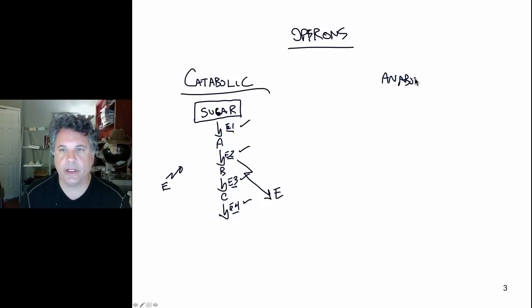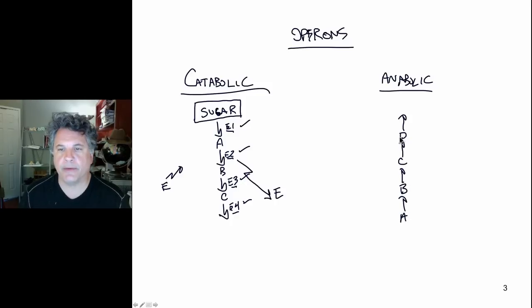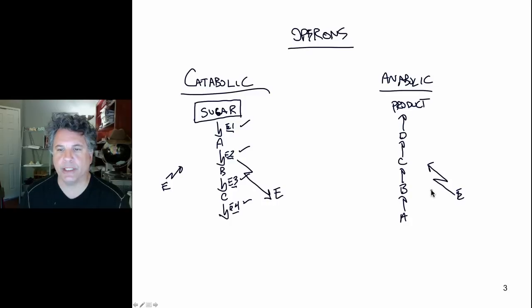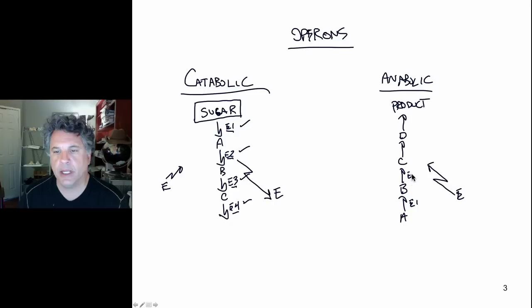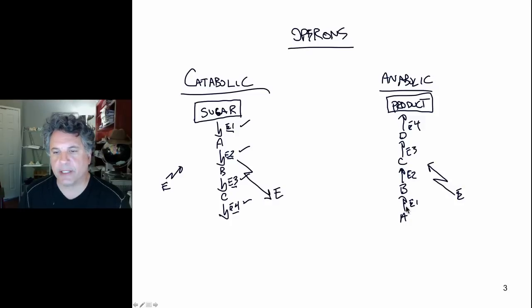In anabolic pathways, we are talking about the building up of a product useful to the cell. We might convert compound A to B to C to D to some product — for example, an amino acid — and this requires an input of energy, not only in ATP for individual steps but also in the manufacture of enzymes 1, 2, 3, and 4. So energy is required in anabolic pathways to synthesize a particular product, including the manufacture of the gene products required to run the biochemical pathway.